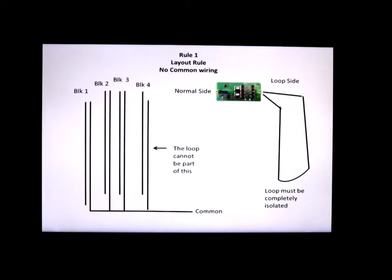Okay let's take a look at rule number one. Rule number one says you cannot use a loop as part of a common layout configuration. For example on the left, my system has four or five blocks and one rail for each block is tied to a common to reduce the number of wires and the other rail is connected to power. It states in the book, although it's buried there a little bit in the instruction manual, the loop cannot be part of the common wiring for the layout.